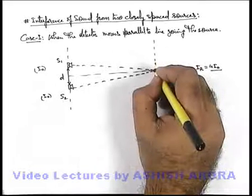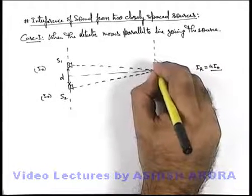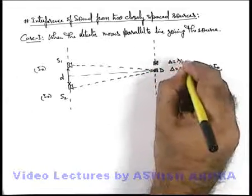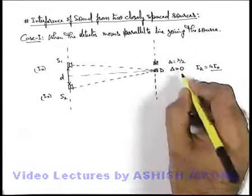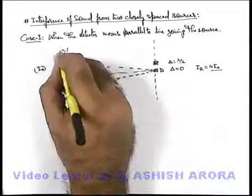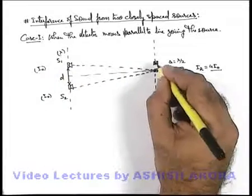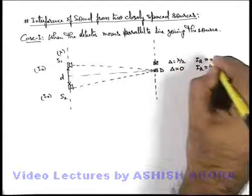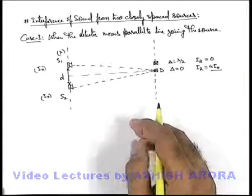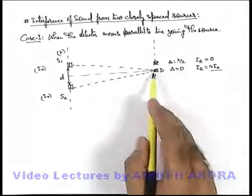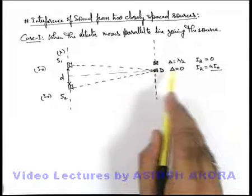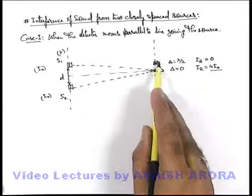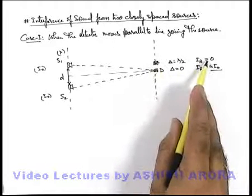In this situation, at the location of the detector, when the path difference is increasing from zero and becomes equal to λ/2, and if the sound wavelength is λ, as soon as the path difference becomes λ/2, destructive interference takes place and the resulting intensity becomes zero. So as the detector started moving, the resulting intensity in the detector was dropping, and this is the location where it drops down to zero.